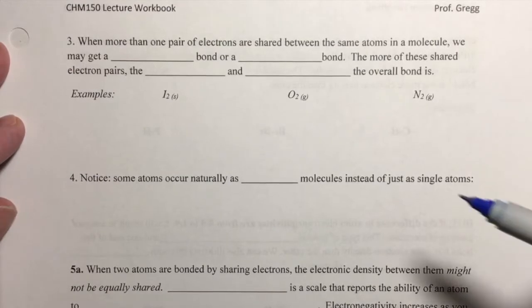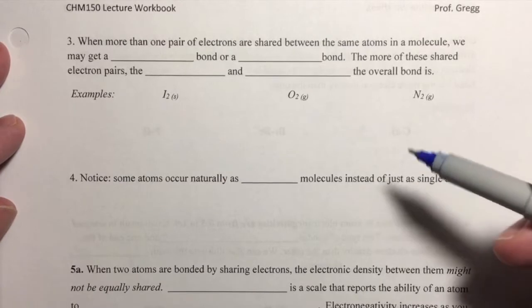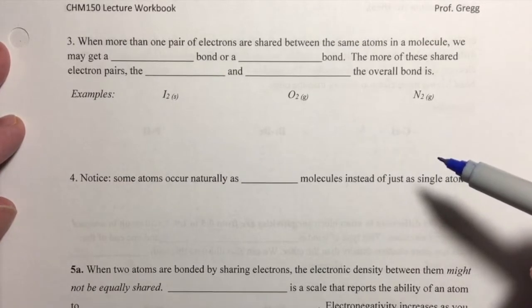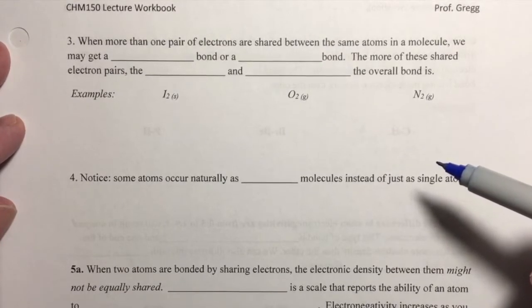We've talked about when you have unshared electrons that we represent them as dots, and when you have a single pair of shared electrons we represent it as a straight line, and that straight line represents a single bond.